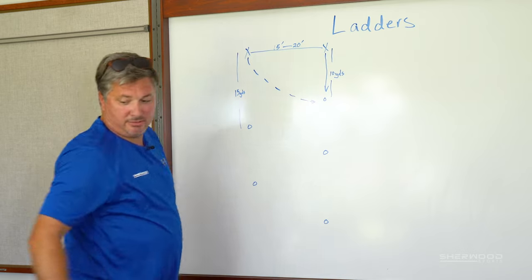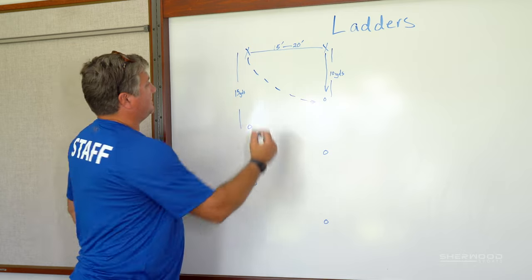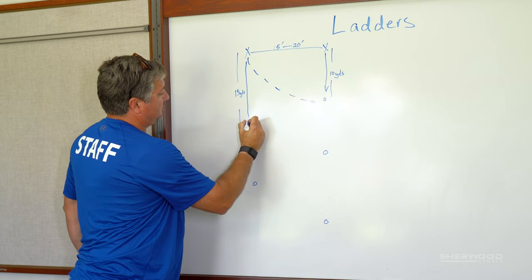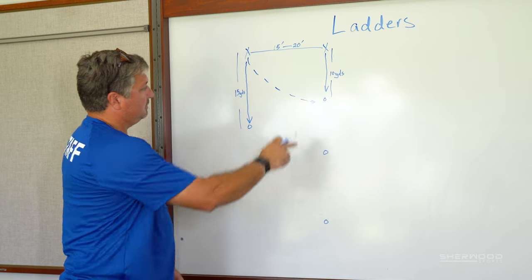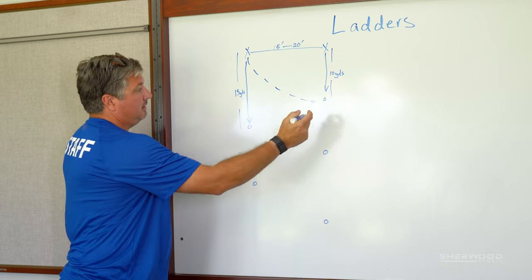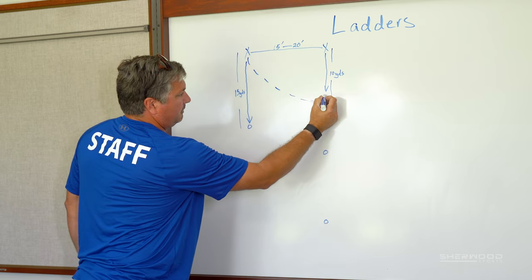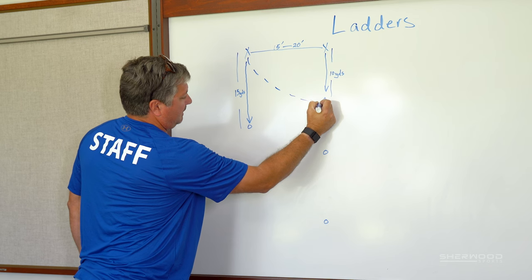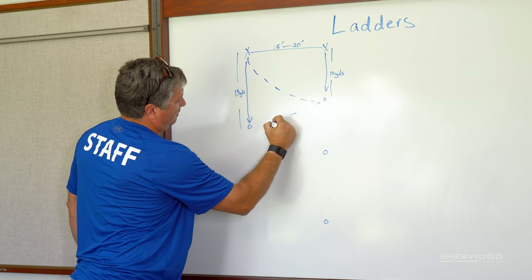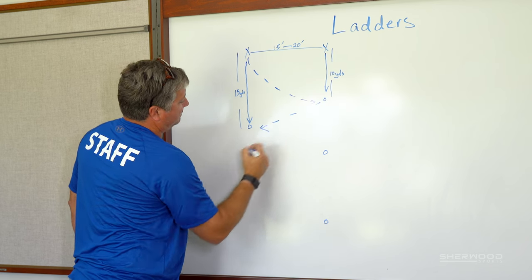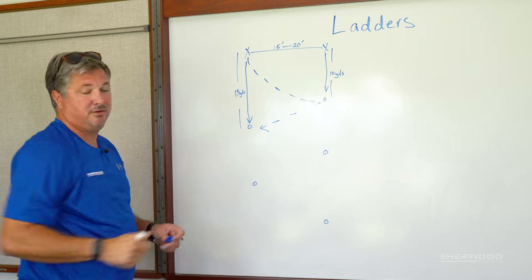As player number one passes they then move to their first cone which is at 15 yards. As soon as player number two receives the pass they will pass the ball into position for player number one.